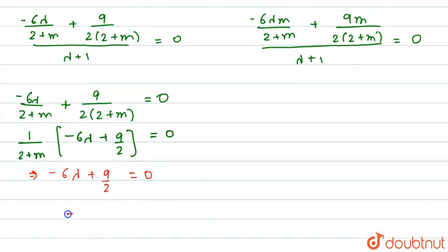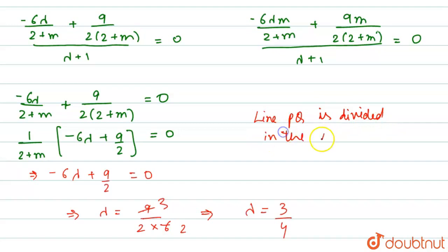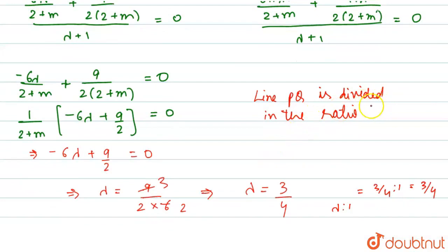Further solving, lambda equals to 9 by 2 into 6. We cancel 3 from 9 and 3 from 6, so lambda equals to 3 upon 4. Therefore, the ratio lambda is to 1 equals to 3 by 4 is to 1, which is 3 is to 4. So, line PQ is divided in the ratio 3 is to 4. Therefore, 3 by 4 is the correct answer.